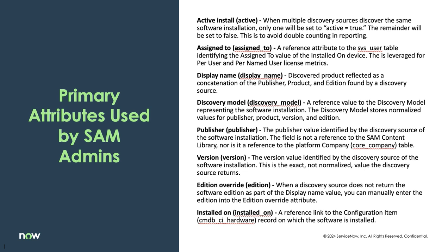Assigned To — we want to make sure that you're leveraging the per-user or per-named-user license metrics, so you want to make sure that the device these software installations are on is assigned to somebody. The Display Name Discovered is what is discovered — the publisher and product. This is what's found on the discovery source. Discovery Model is a reference value to the discovery model represented in the software installation.